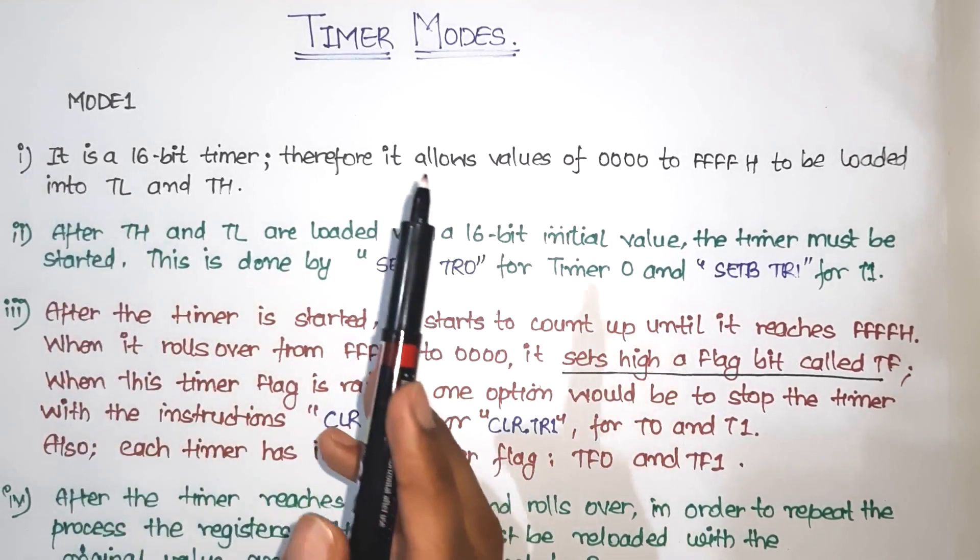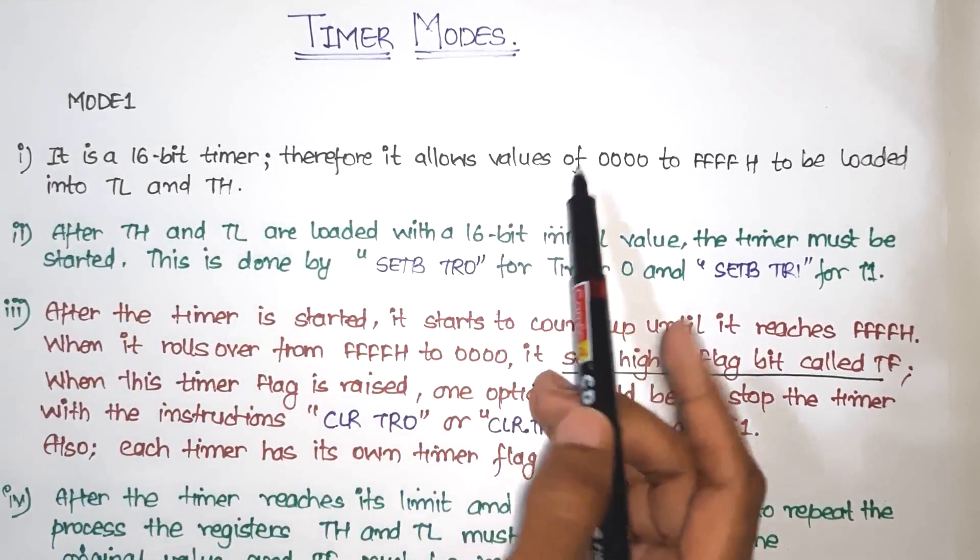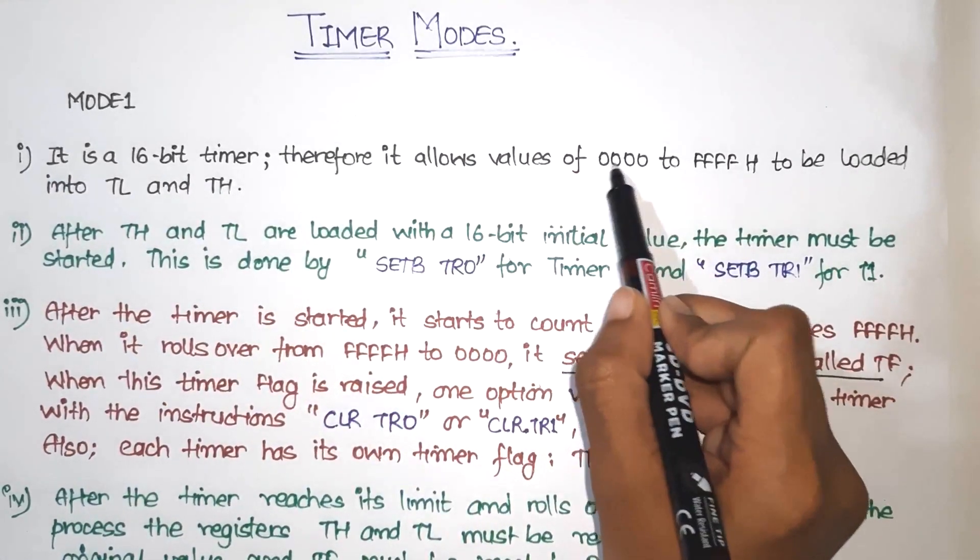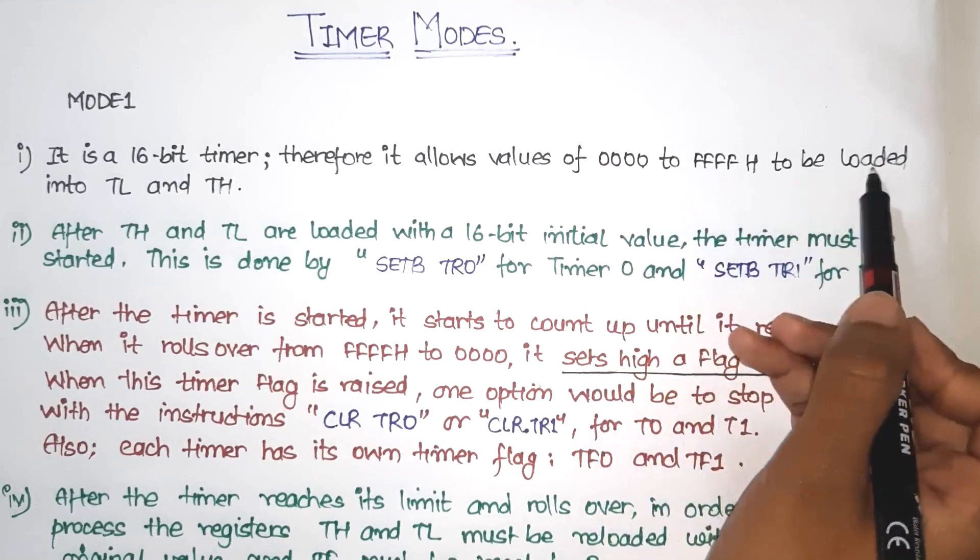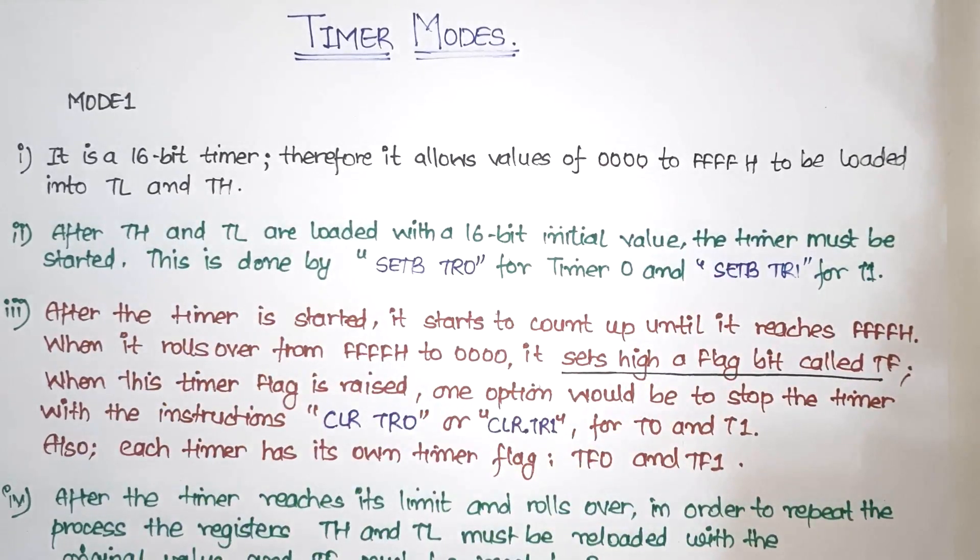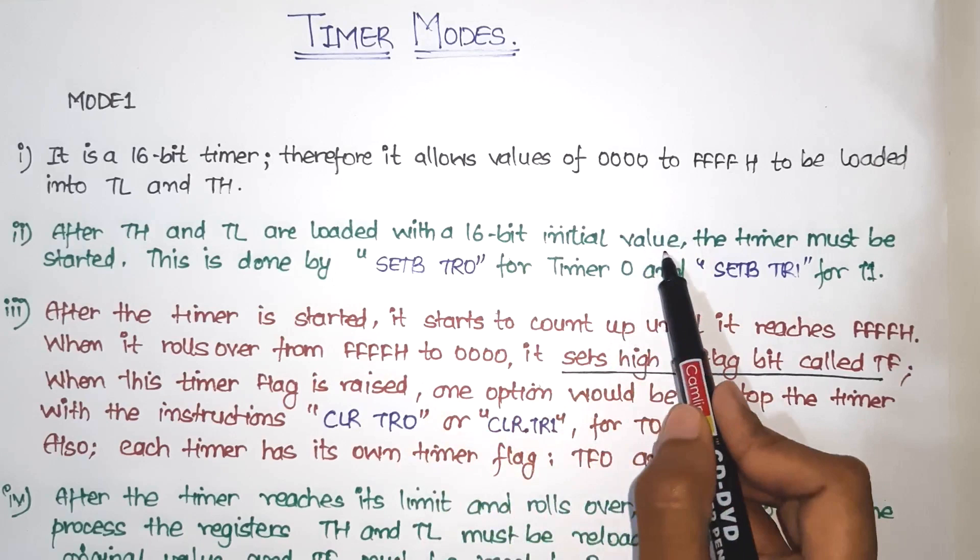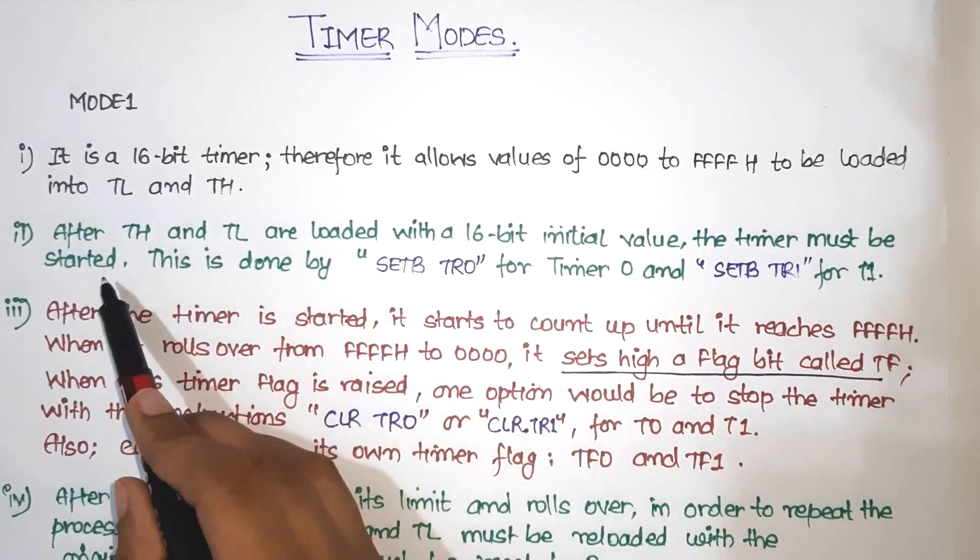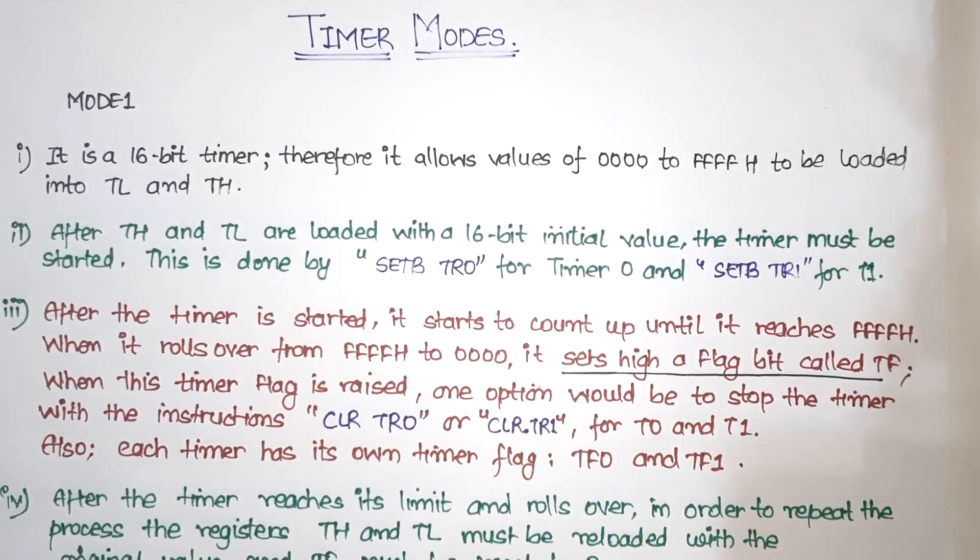Our timer was a 16-bit timer, therefore it allows values from 0000 to FFFF hexadecimal. These values are loaded into TL and TH. After TL and TH are loaded with a 16-bit initial value, the timer must be started. So once we have added the initial value, then our timer should start.